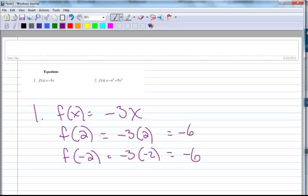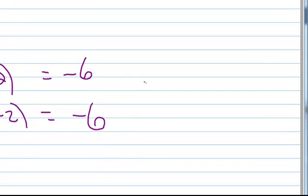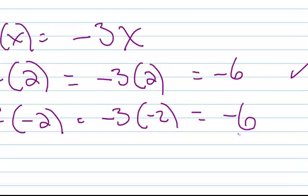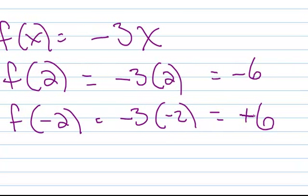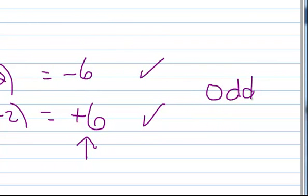So I put in 2, I get out negative 6. So far, so good. I put in the opposite of 2, I get out the opposite of... oops, that should be positive 6. There we go. I put in the opposite of 2, which is negative 2, I get out the opposite of negative 6, which is positive 6. So that makes that one an odd function.